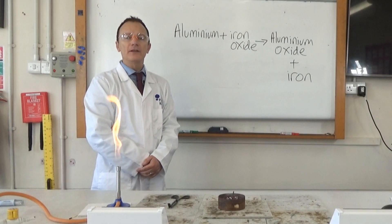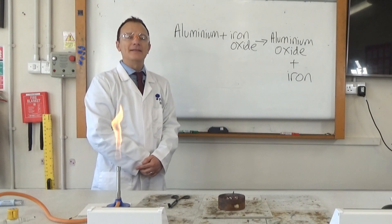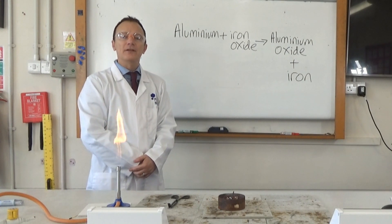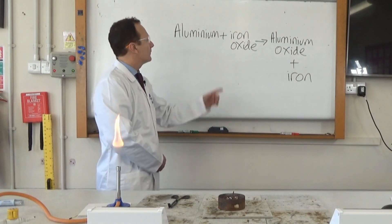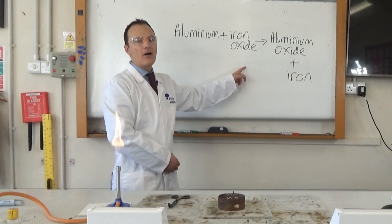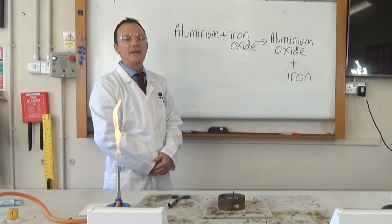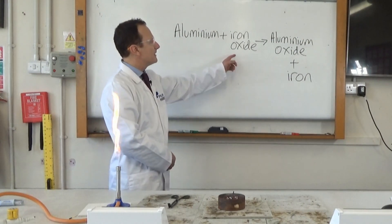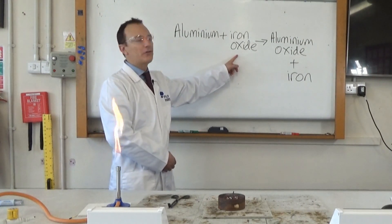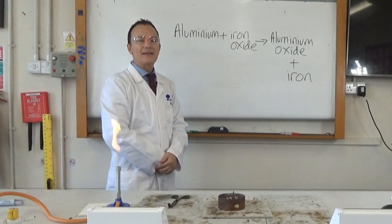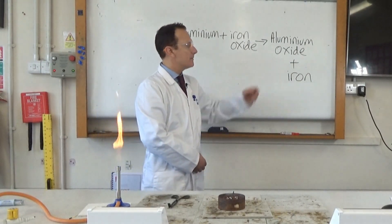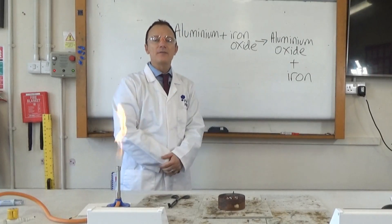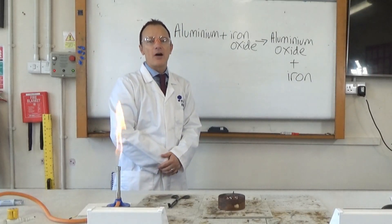We're going to use our knowledge of the reactivity series and displacement reactions to predict what will happen in this reaction. This reaction is called the thermit reaction. And it's between aluminium and iron oxide. Now, aluminium is more reactive than iron. It's higher up the reactivity series. So the aluminium is able to take the oxygen away from the iron. We say it displaces the iron. So that will form aluminium oxide and that will leave iron on its own. So at the end of the reaction, we should see a red hot lump of iron.